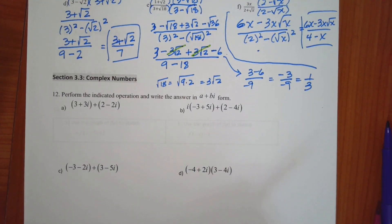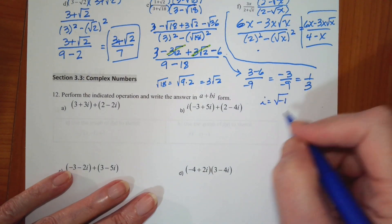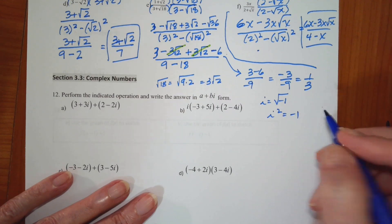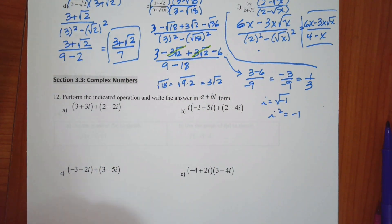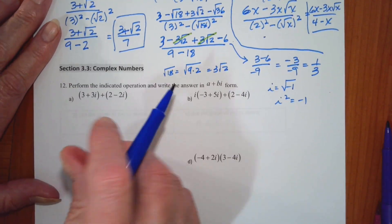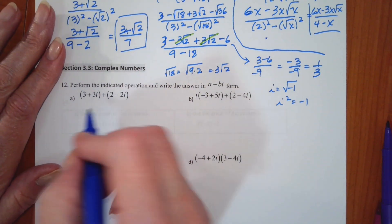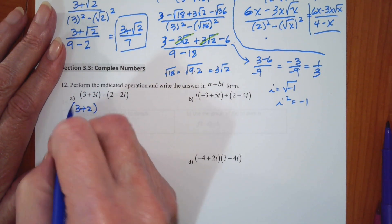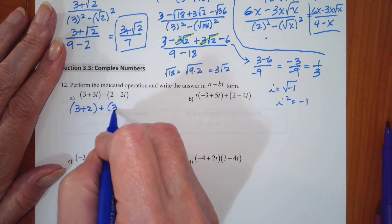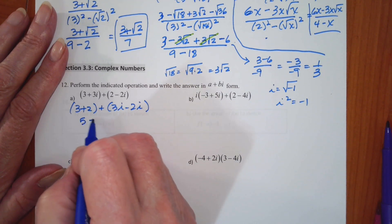Perform the indicated operation and write the answers in a plus bi form. Remembering that i equals the square root of negative 1 and i squared is equal to negative 1 — those are the big rules to remember here. So if I'm adding these, I just want to add the real components. This is going to be 3 plus 2 plus 3i minus 2i, which gives me 5 plus i.